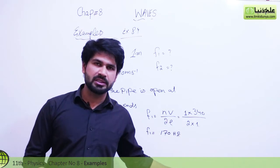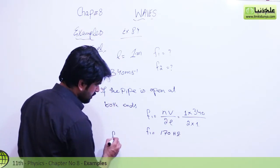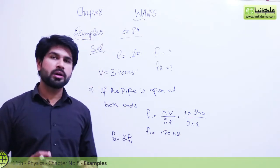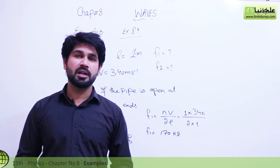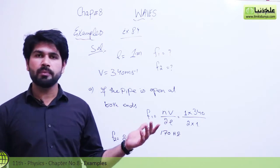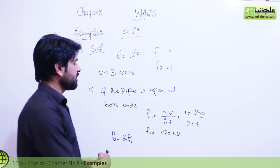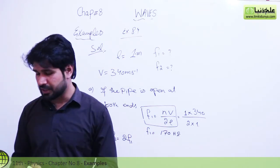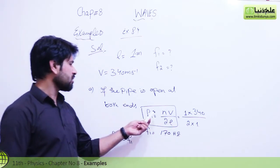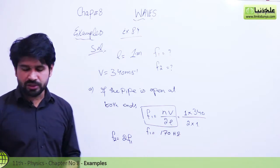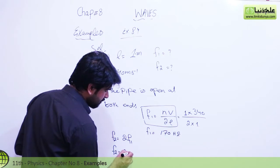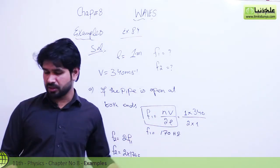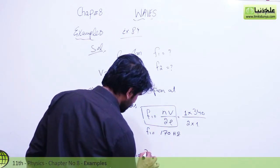This is the fundamental frequency. Now we find f2. When the pipe is open at both ends, the harmonic series gives f2 = 2f1. So f2 = 2 × 170 = 340 Hz. This is the second harmonic frequency for the open pipe.